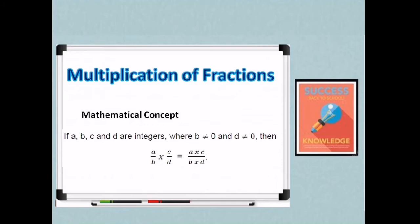So mathematically, if a, b, c, and d are integers, where b is not equal to zero and d is not equal to zero, then a over b times c over d equals a times c over b times d or ac over bd. So you just multiply the numerators and denominators to get the product of two fractions.